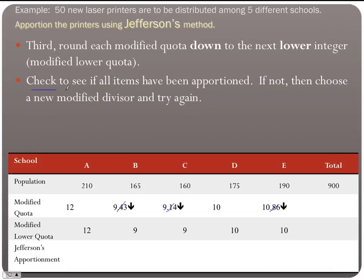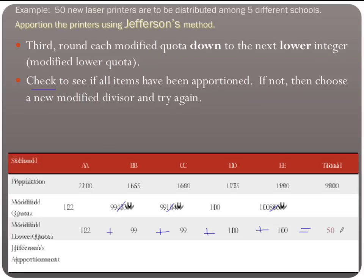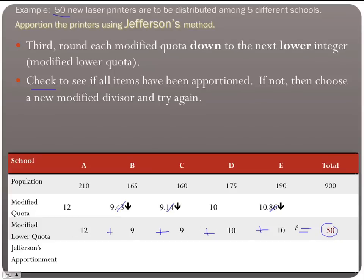Now check: have all items been apportioned? If not, we choose a new modified divisor and try again. Adding the modified lower quotas: 12 + 9 + 9 + 10 + 10 = 50. We chose a modified divisor that worked perfectly — all 50 laser printers are apportioned. So Jefferson's final apportionment is: A = 12, B = 9, C = 9, D = 10, E = 10.